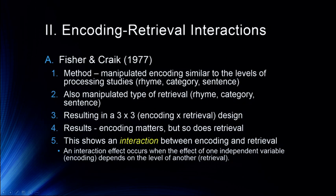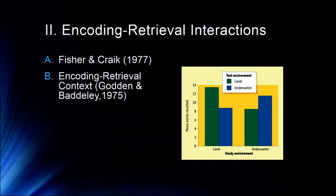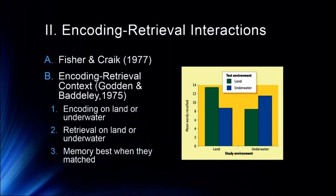That is the first look at how type of encoding and retrieval play an important role in how memory works. Another great study by Godden and Baddeley went into a scuba diving class and had participants study word lists on land or underwater, then retrieved them on land or underwater. Essentially the same result: when conditions at encoding match conditions at retrieval, we get the best memory performance. When studying on land, best retrieval on land; when studying underwater, best retrieval underwater.